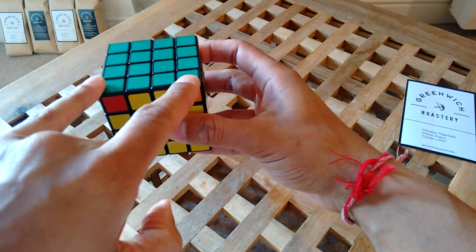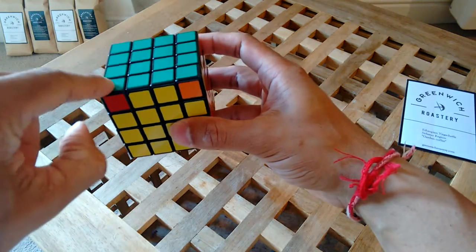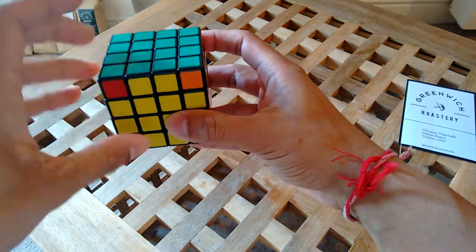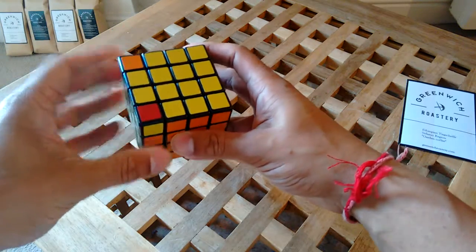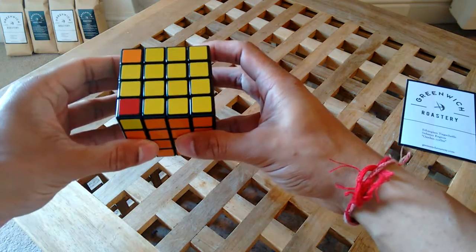Now, we want to hold the cube so that these corners we're going to flip are on the top left-hand edge, like this. This is how we want to hold it.